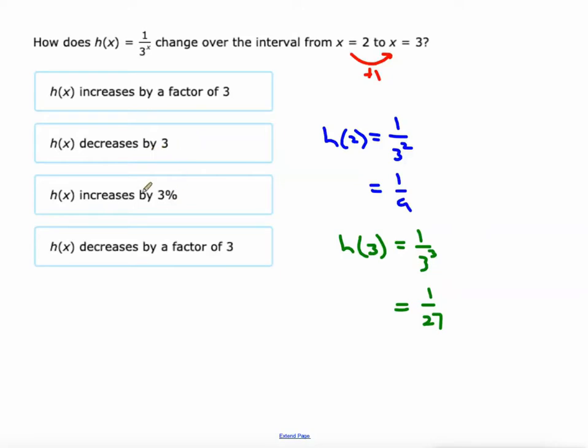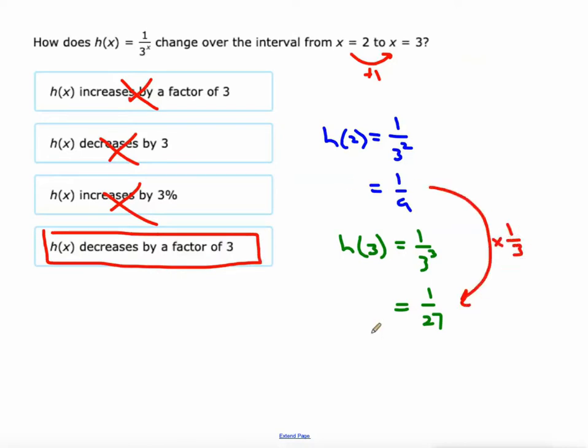No, it decreased by less than 1. Did it increase at all? No. So what's that leave us with? That it decreases by a factor of 3, which is kind of like multiplying by 1/3. That's what happened.